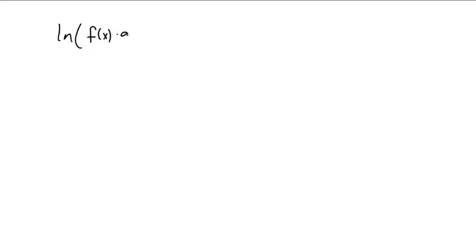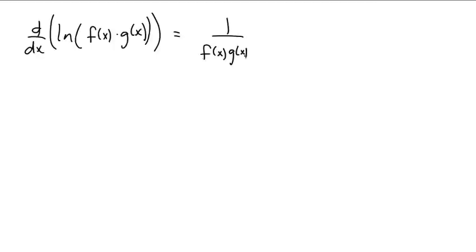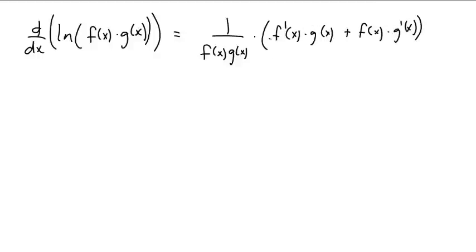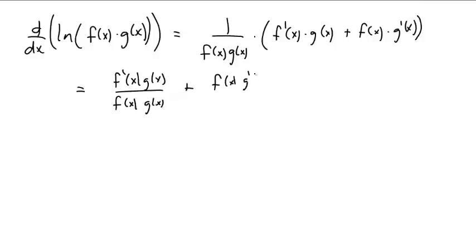Let's try another one. Let's look at the natural log of f(x)·g(x) and find its derivative. The derivative of ln(f(x)·g(x)) is 1 over f(x)·g(x), times the derivative of what's inside. We have to use the product rule, giving us f'(x)·g(x) + f(x)·g'(x). Splitting that up over f(x)·g(x), the g(x)'s cancel in one term and the f(x)'s cancel in the other.